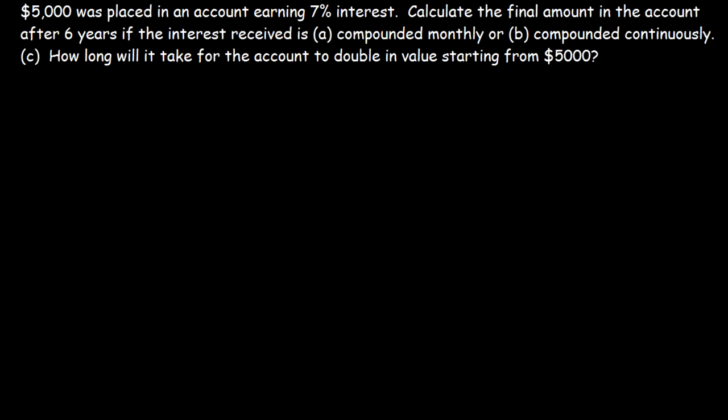Go ahead and solve this word problem. $5,000 was placed in an account earning 7% interest. Calculate the final amount in the account after 6 years if the interest received is compounded monthly.